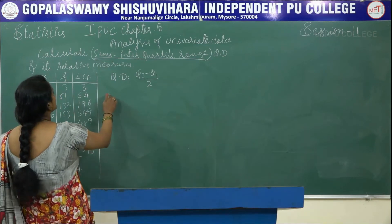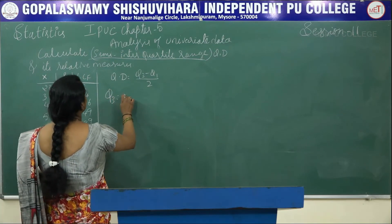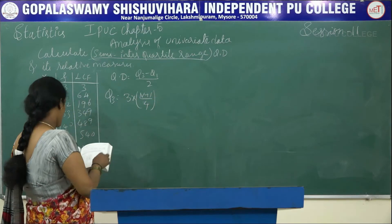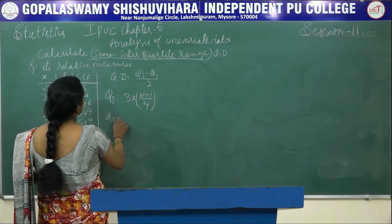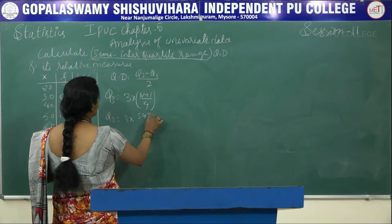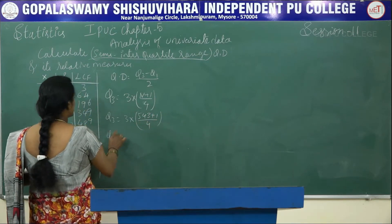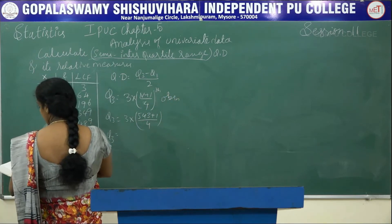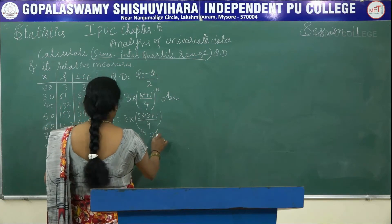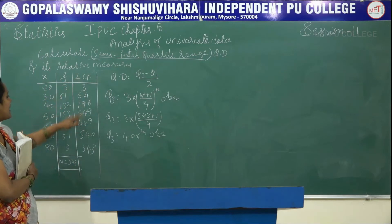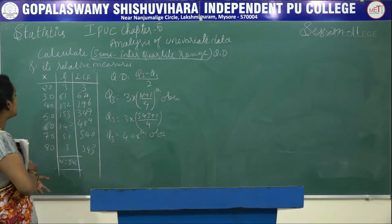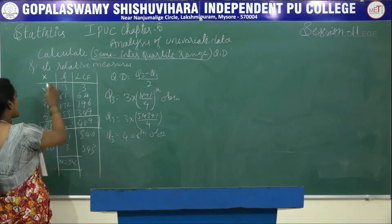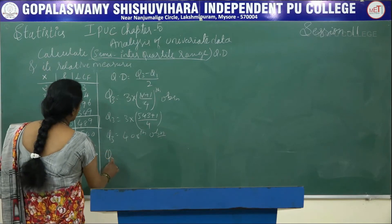To find Q3: Q3 is the 3 into N plus 1 by 4 observation, which is 3 into 543 plus 1 by 4, giving the 408th observation. We look for 408 in the LCF; it falls in 489. The X value corresponding to this LCF is Q3, so Q3 is equal to 60.